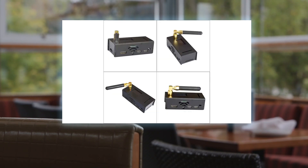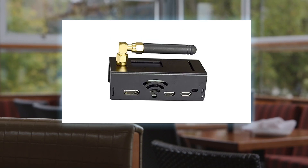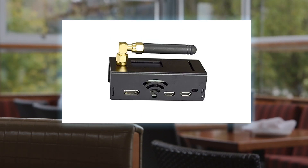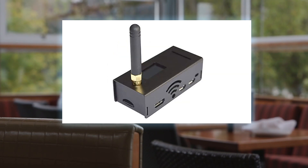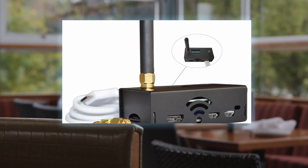Wi-Fi SSID must be 2.4 GHz, as the Pi Zero W does not support 5.8 GHz. Wi-Fi will not work with WEP — make sure your Wi-Fi password type is WPA. Power on the hotspot for two minutes to automatically connect to the network, or follow the instructions to connect the hotspot to your router.